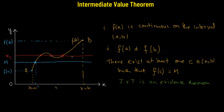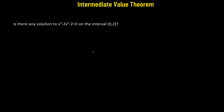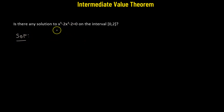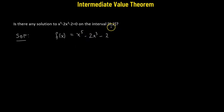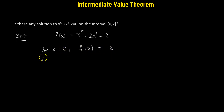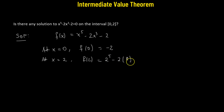So let's understand this with the help of an example. In this particular problem, we have to check whether there is any solution for this given polynomial equation. So let's begin by considering the polynomial function x raised to the power of 5 minus 2x cubed minus 2. Now we will be applying the boundary conditions. We have the interval 0 to 2. So at x equals to 0, f of 0 will be equals to negative 2. And at x equals to 2, f of 2 will be equals to 2 raised to the power of 5 minus 2 times 2 cubed, which is 8 minus 2. So this gives us the value 14.